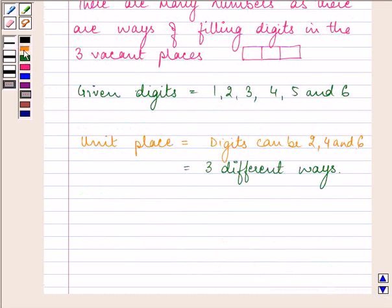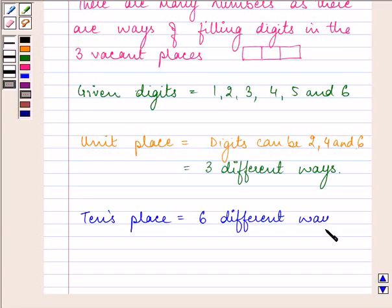The ten's place now can be filled up with any of the six digits as the repetition is allowed, so there are six different ways of filling up the digit that will be on this ten's place.